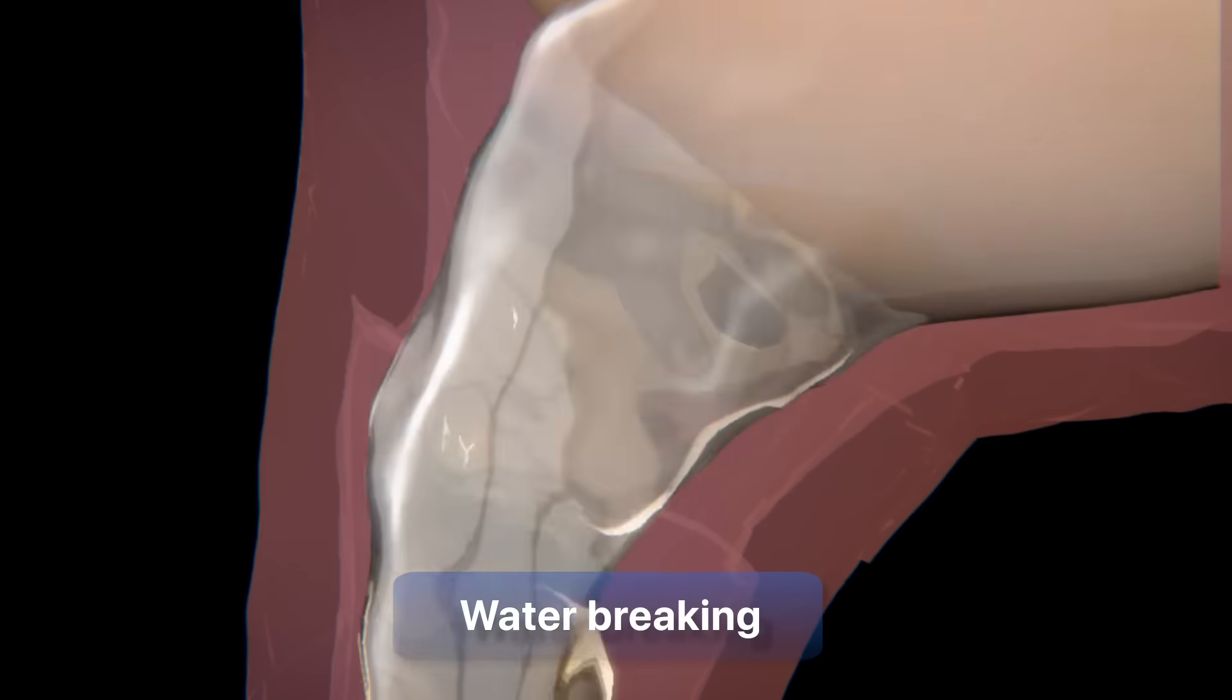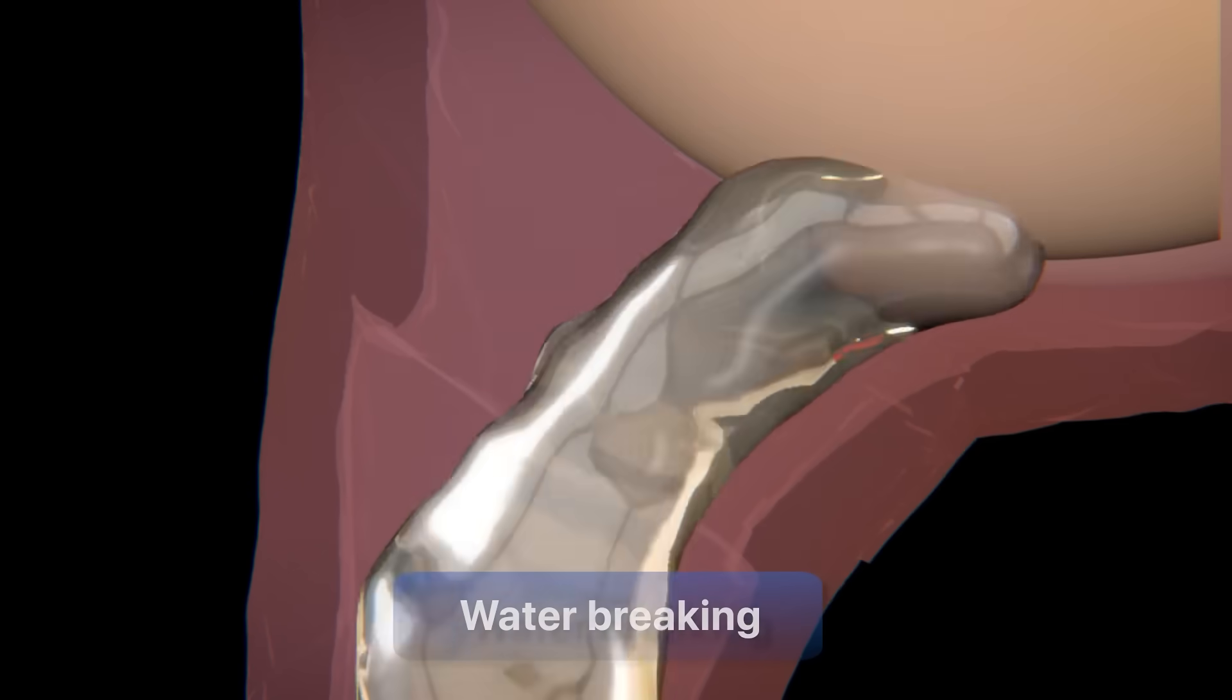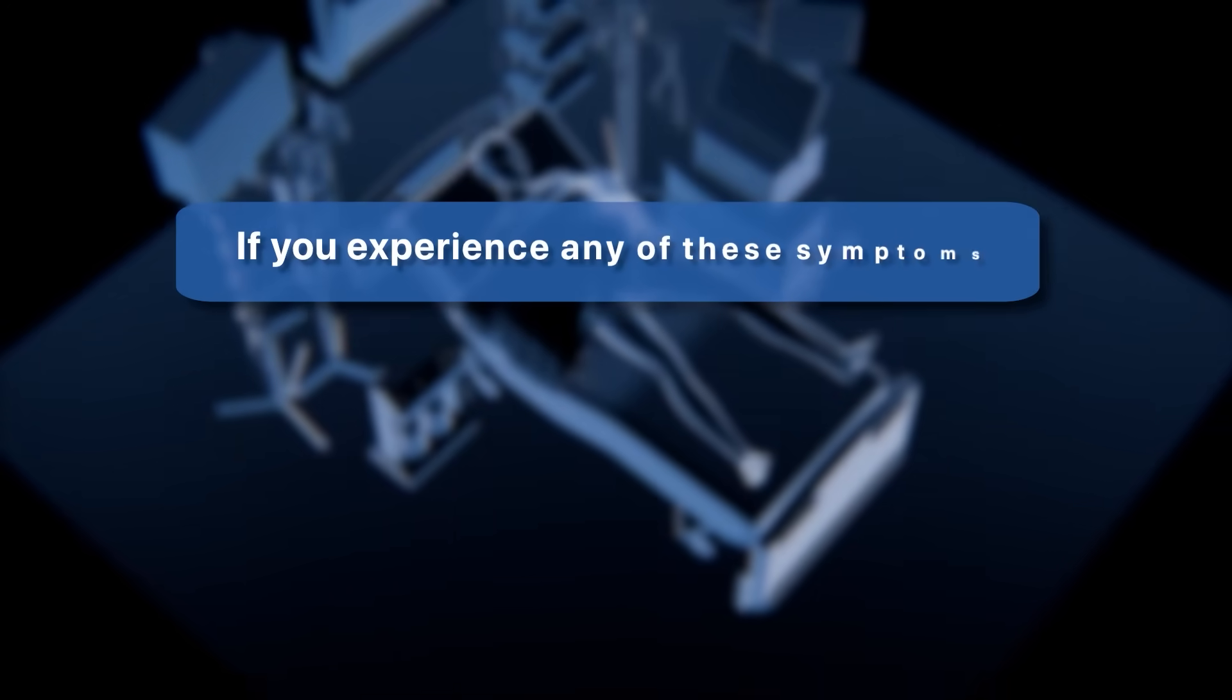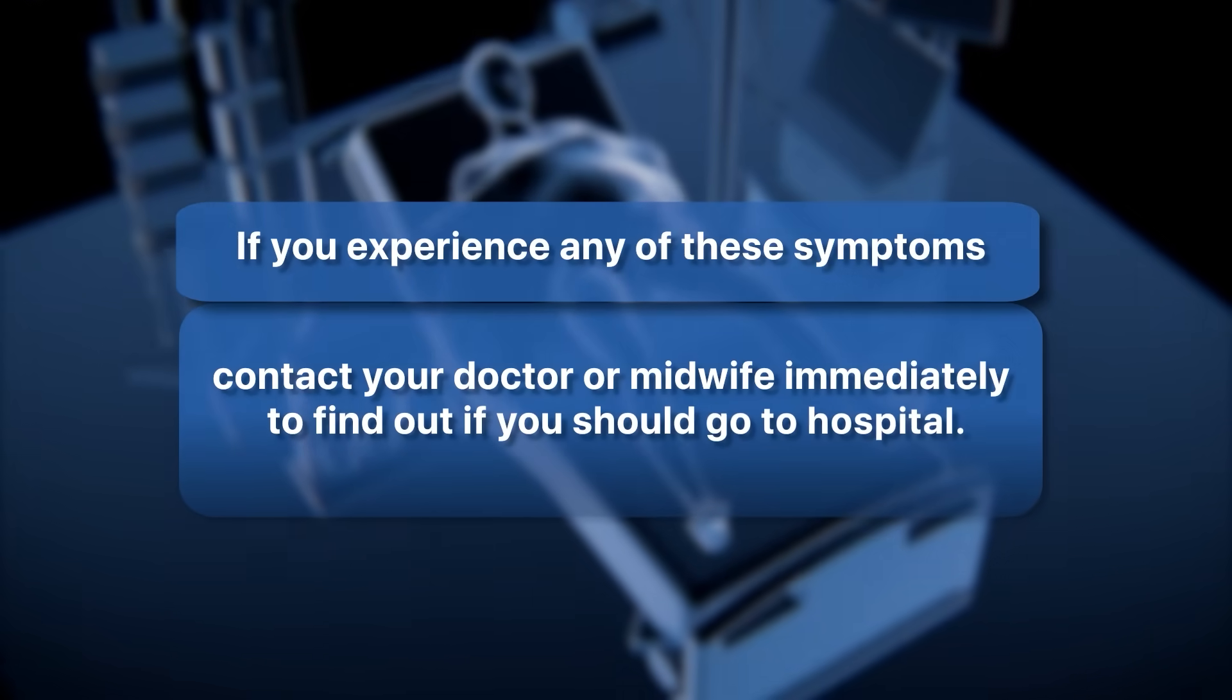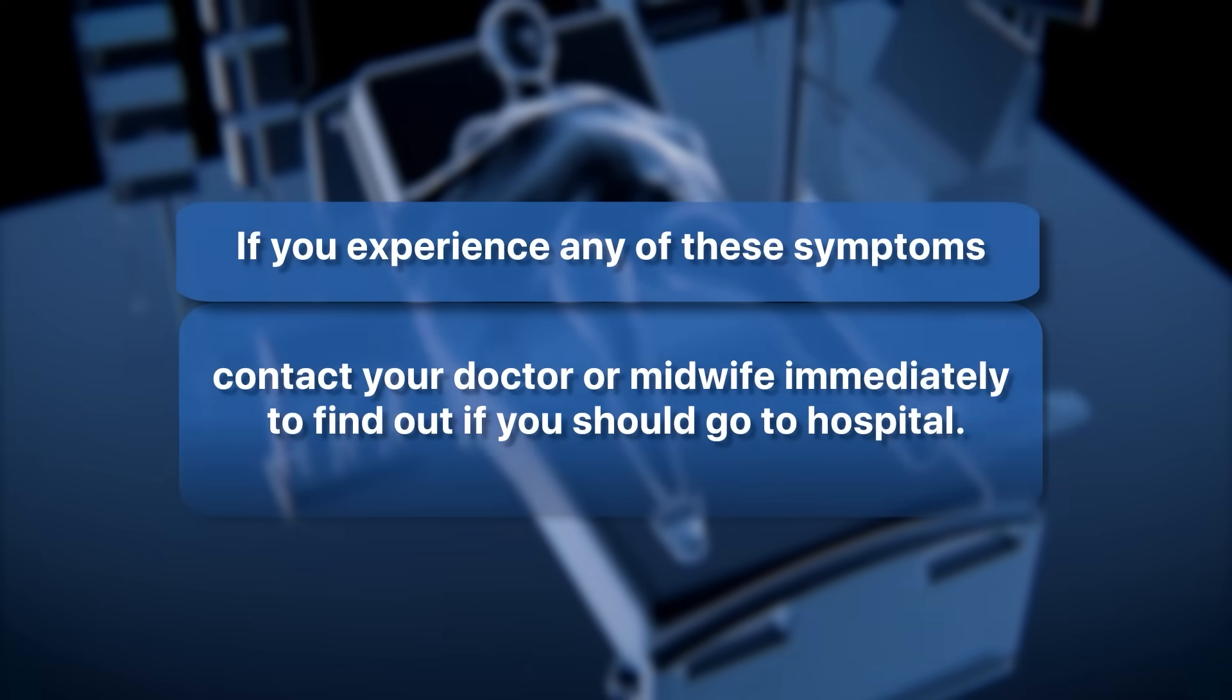If the amniotic sac that holds the baby bursts during pregnancy, a procedure also known as water breaking, you may experience a heavy gush of water or a continuous drip. If you experience any of these symptoms, contact your doctor or midwife immediately to find out if you should go to the hospital.